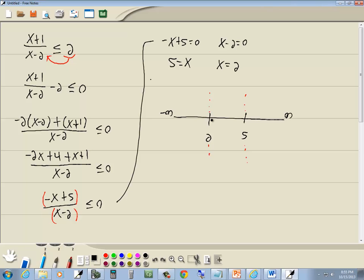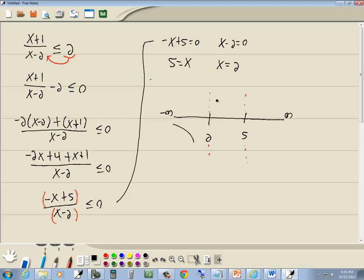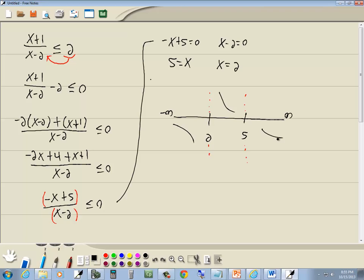Now, from negative infinity to 2. Well, here's 2 and I see it's below. Between 2 and 5. Here's 2 and here's 5. I see it's above. From 5 on. I see, well, it's below over here. So it's below in all of the interval.